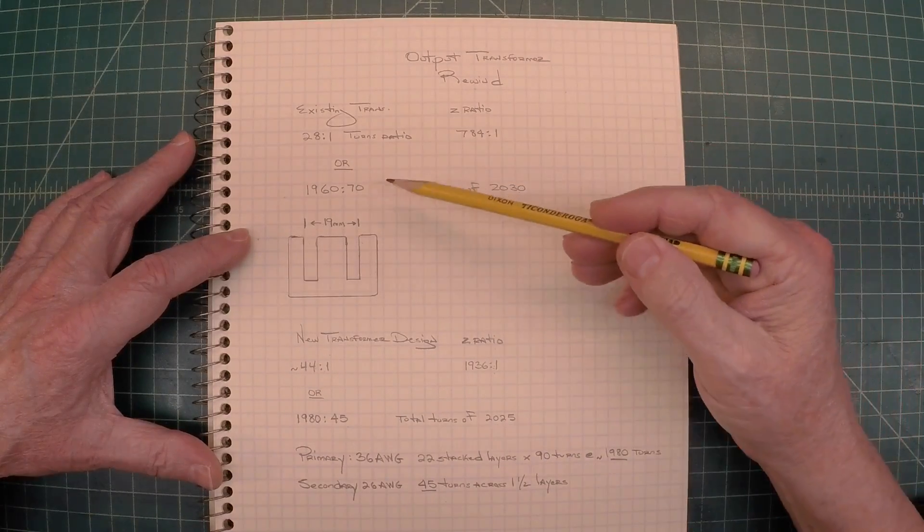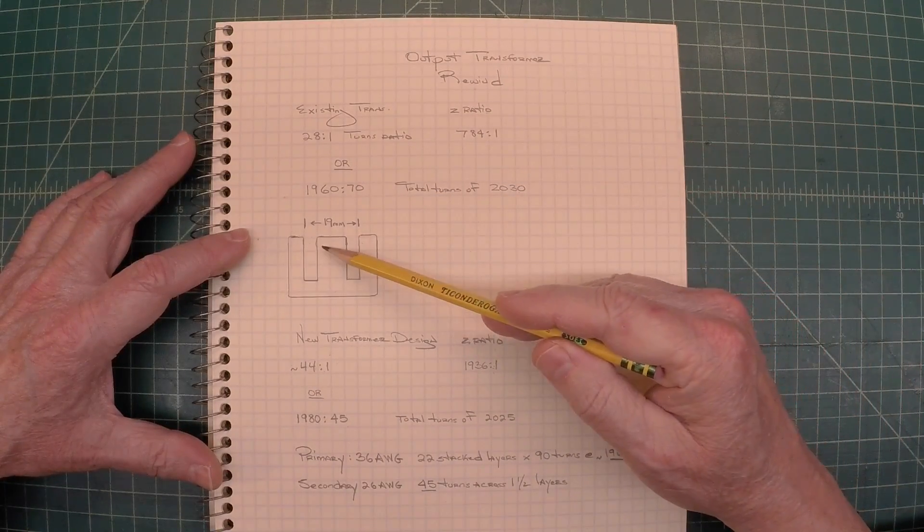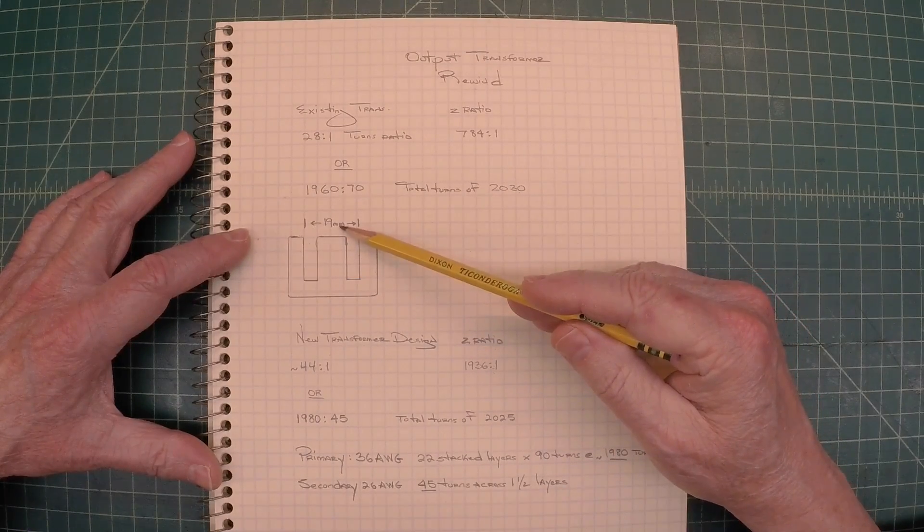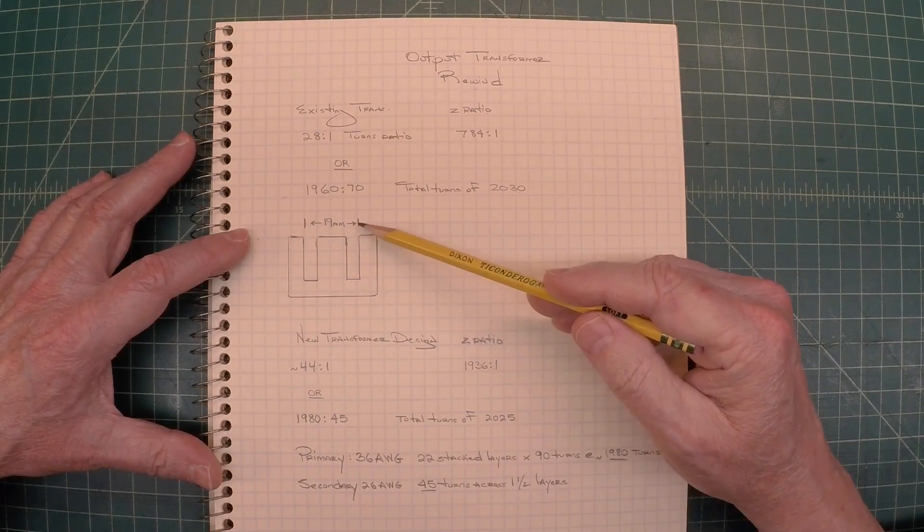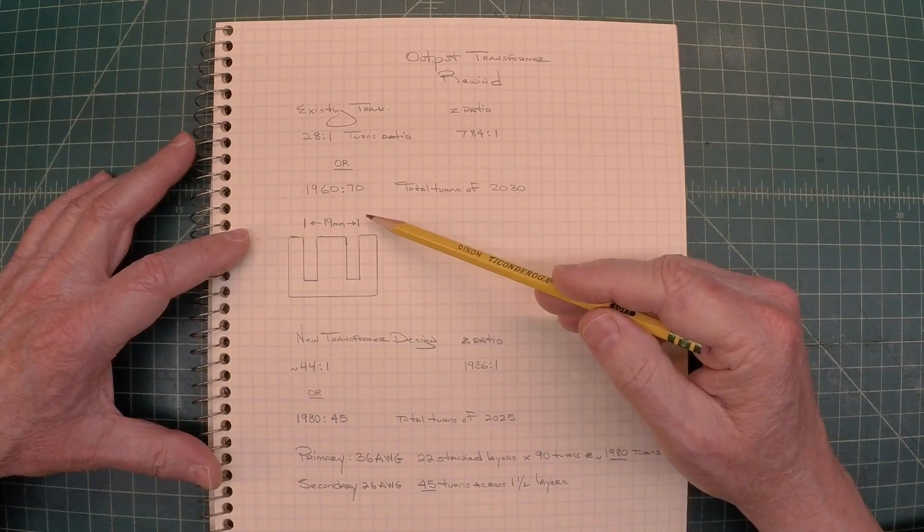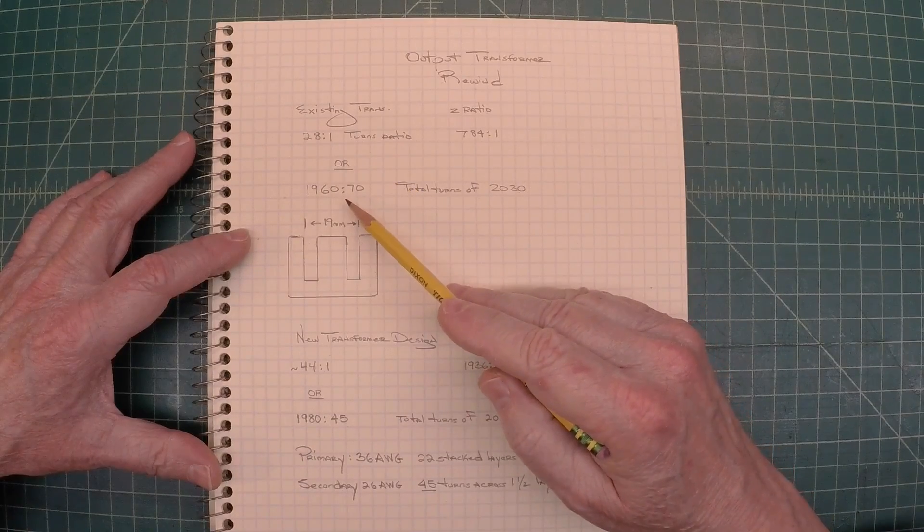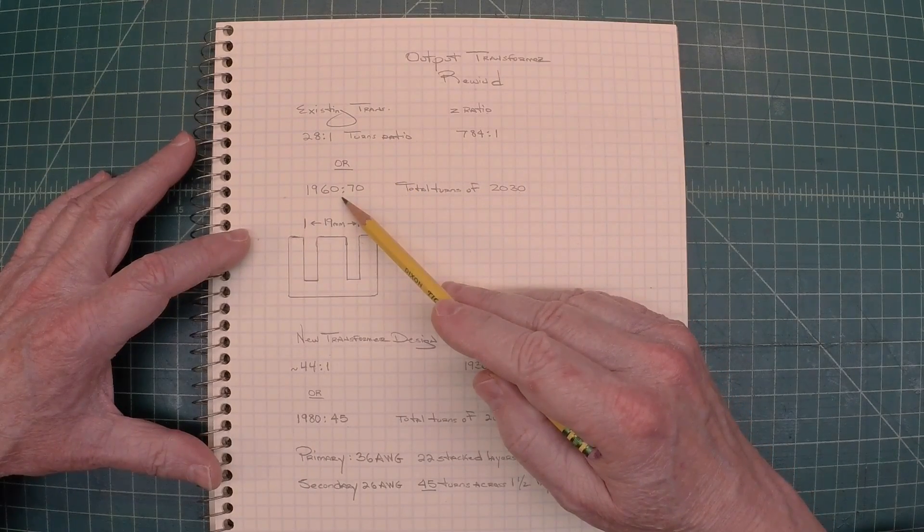So what I did, you can see I've got the laminated iron pieces here. And I've only got a window to work in of 19 millimeters. So I've got to make sure the girth of the new transformer doesn't exceed that.